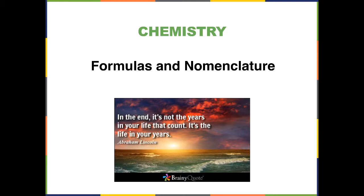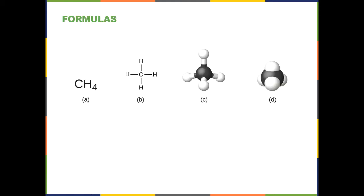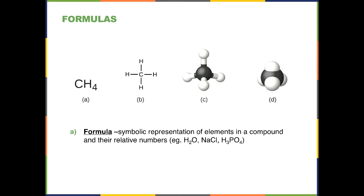Today we're going to talk about formulas and nomenclature. Nomenclature is how compounds are named. In terms of formulas, there are various types that can be used. A formula is a symbolic representation of the elements in a compound and their relative numbers. For example, the formula for water is H2O, meaning there are two hydrogen atoms and one oxygen atom in water.